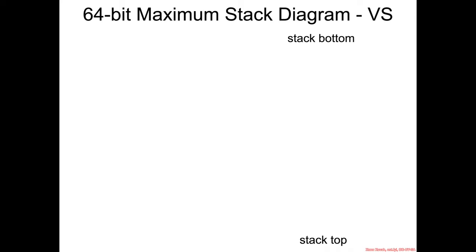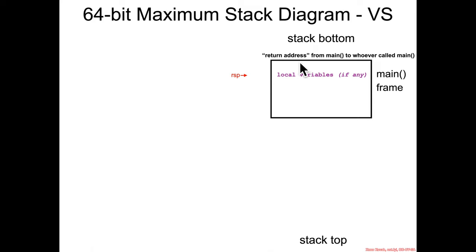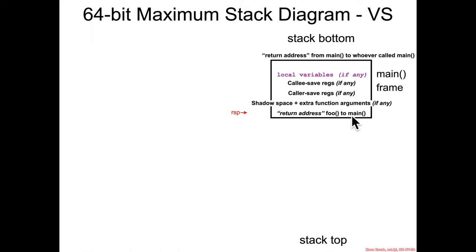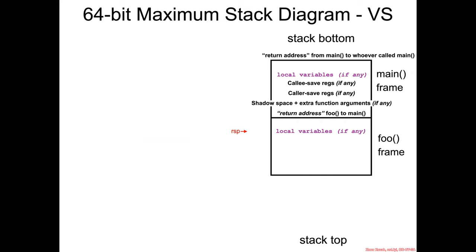Let's see what a 64-bit stack diagram would look like for Visual Studio. Return address as usual — rsp calling into a function, return address on the stack, rsp pointing at local variables if any, callee save registers, caller save registers, then the Microsoft-specific shadow space, any extra function arguments beyond four parameters, and then the return address.